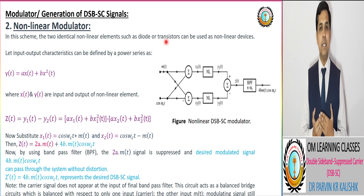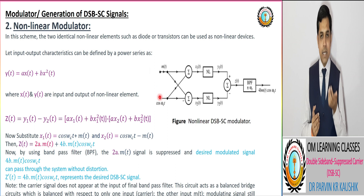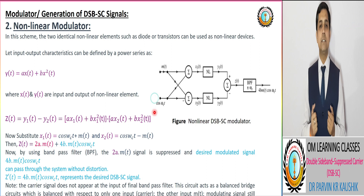The mathematical equation of non-linear devices is equivalent to A·x(t) + B·x²(t). As per the diagram, at one input we have the modulating signal m(t), and at another input we have our carrier signal cos(ωC·t). Corresponding to the diagram, we have the output Z(t) = Y1(t) − Y2(t).